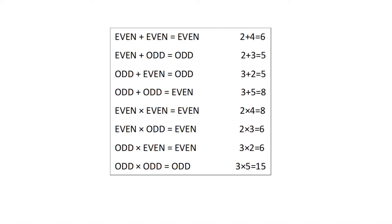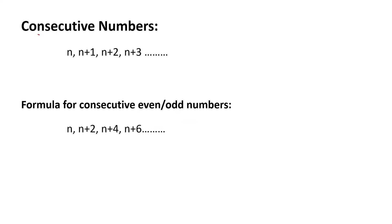If you multiply or divide even and odd numbers, the result is either even or odd — keep that in mind. If any number is multiplied by an even number, the result will be even. Consecutive number formula.